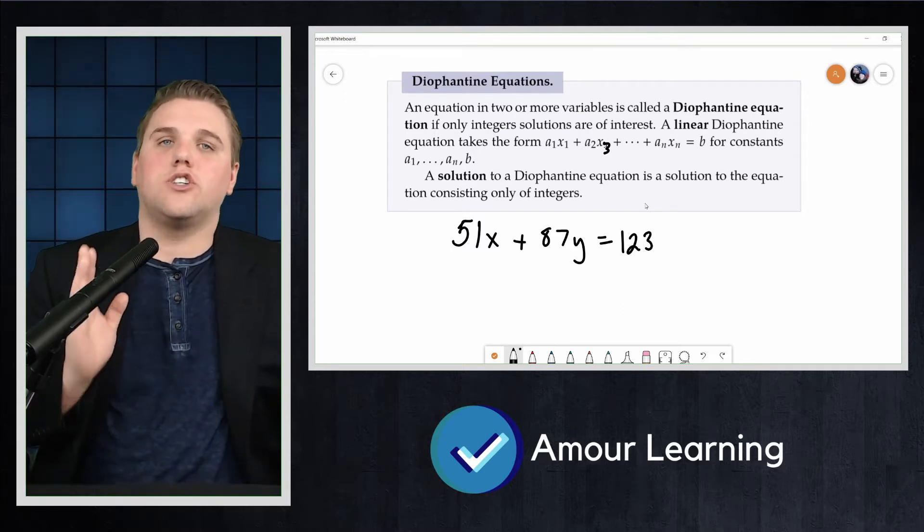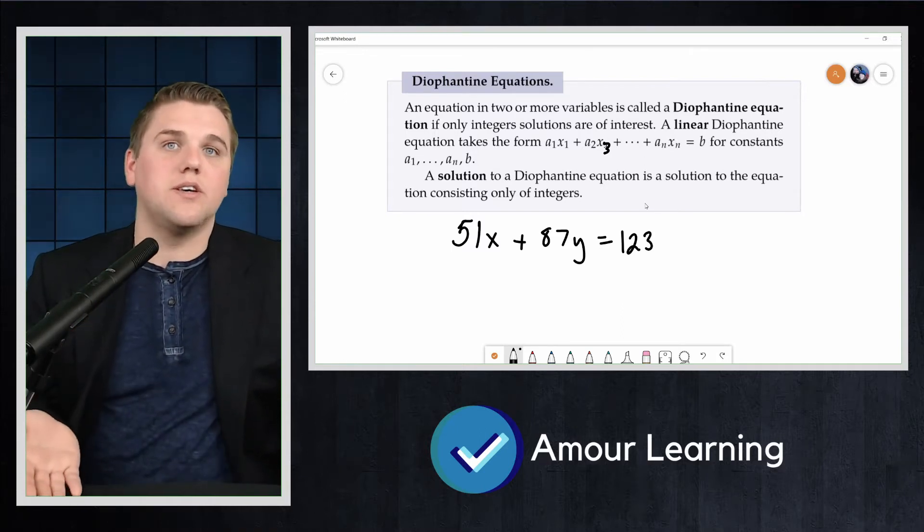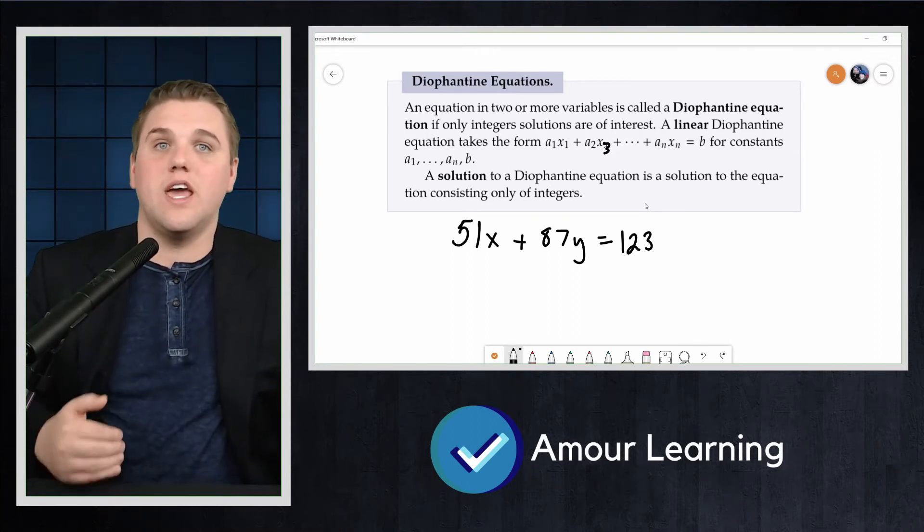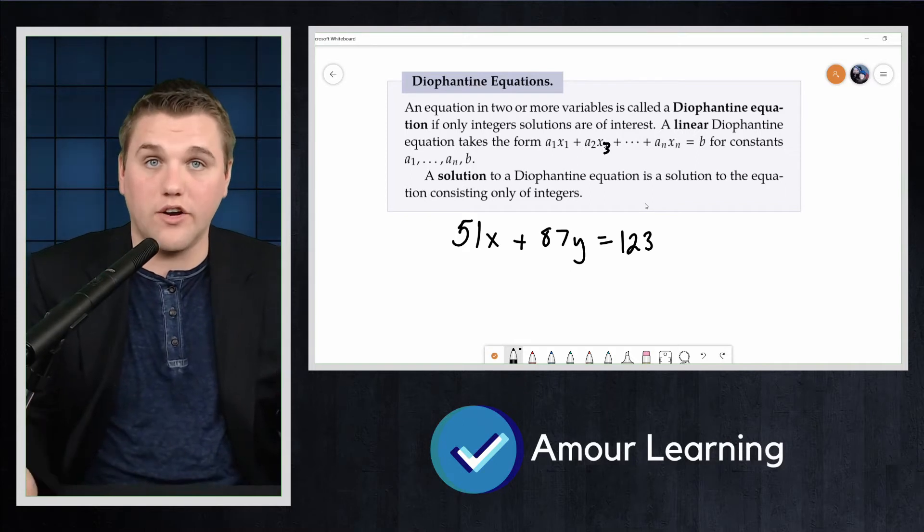First, check if perhaps there are no solutions because a divisor of 51 and 87 is not a divisor of 123.